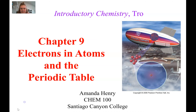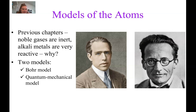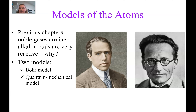In previous chapters, we've talked a little bit about trends. We've talked about that noble gases are very inert and alkali metals are very reactive. This chapter is going to start to explain the why behind that. And in order to explain that, we're going to talk about two different models: the Bohr model of the atom and the quantum mechanical model of the atom. Now up until this point, we've used the nuclear model. Both of these models have good points and bad points, and we need different analogies or different models to help us explain different things. So these two models don't cancel each other out — they each have their own purpose.